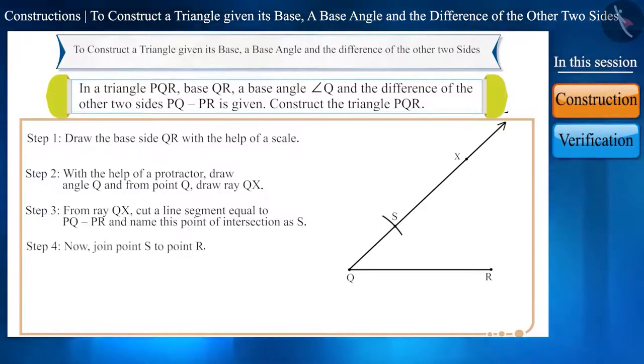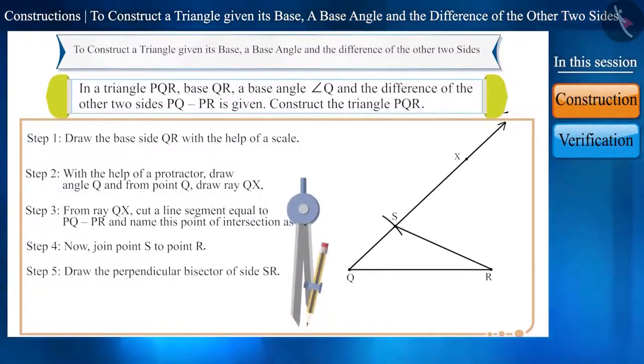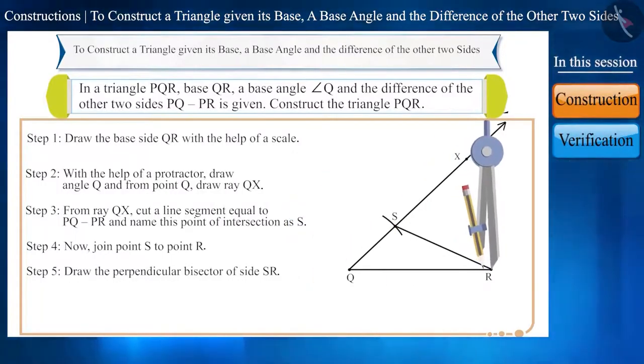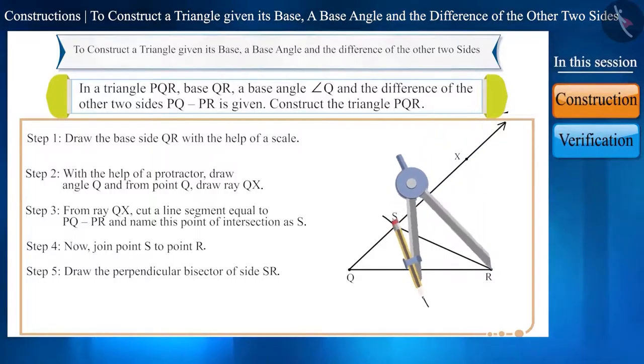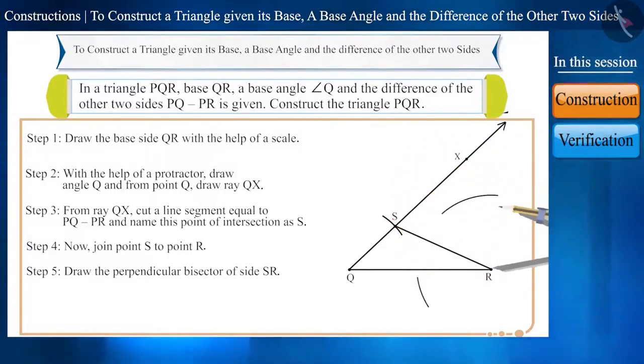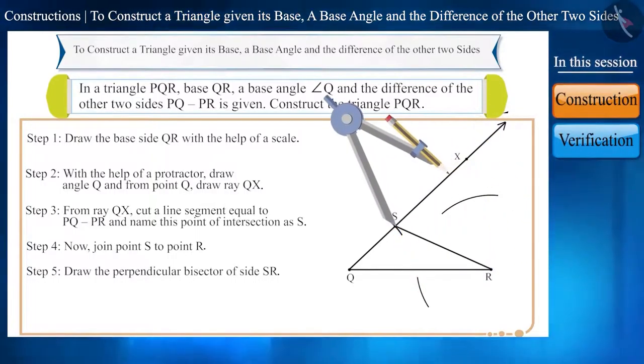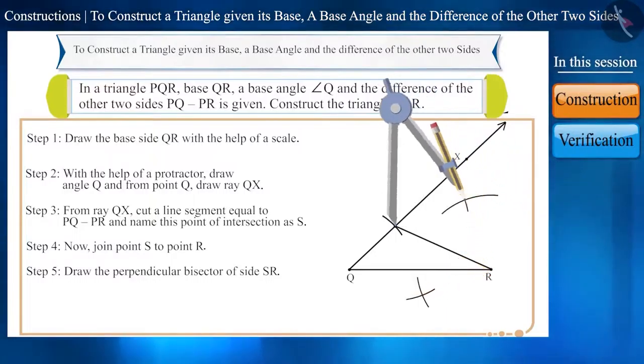Step 4. Now join point S to point R. Step 5. Next, with the help of a compass, we will draw the perpendicular bisector of side SR. We have learned about the construction of a perpendicular bisector in the first session of the construction topic.